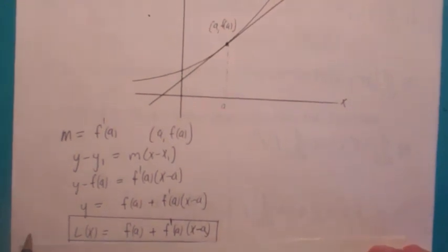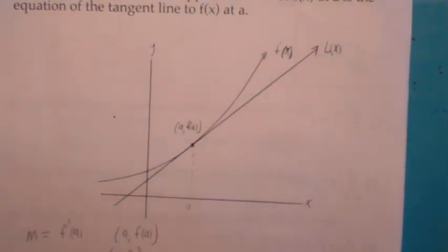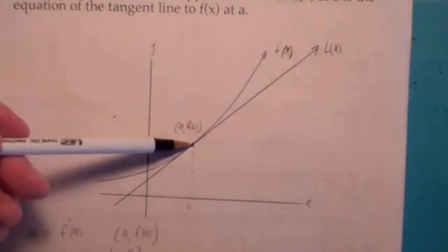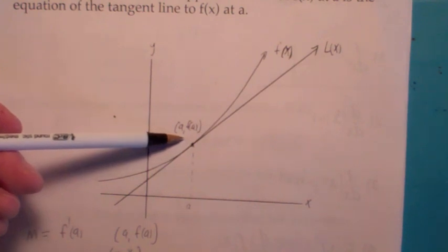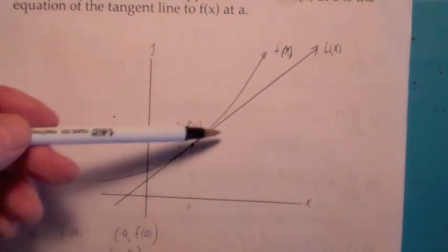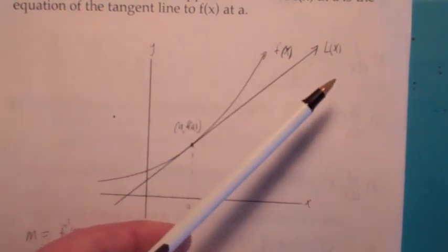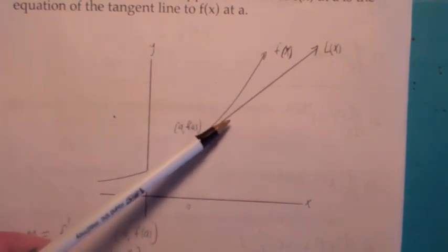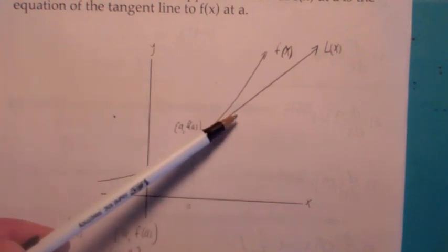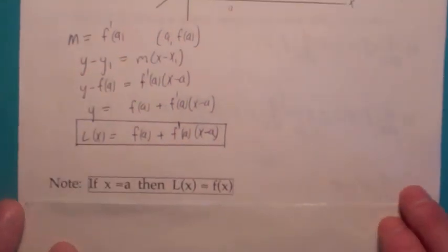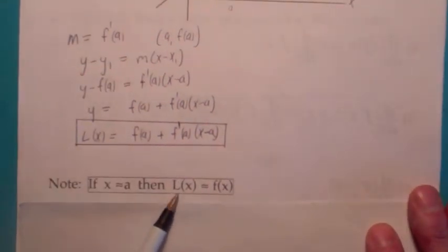The equation for the linear approximation — or the tangent line approximation — is L equals f of a plus f prime of a times x minus a. The significance is that if the function is differentiable at a and you zoom in at this point, the function appears to be acting just like the tangent line. The linear approximation is a good estimator to the function values as long as x is close to a. If x is close to a, L of x will be very close to f of x.